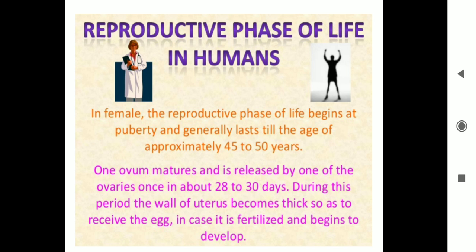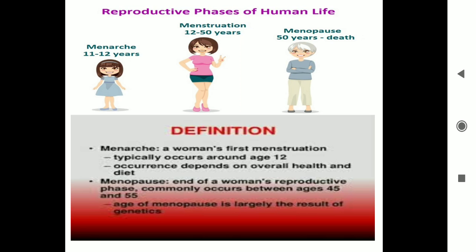This reproductive phase varies across human life, especially in women. Menarche starts from the beginning of puberty, that is around 11 to 12 years. Menstruation begins around 12 years and continues till about 50 years, and in some, due to genetic factors, it may stop at 45. Menopause is the stoppage of menstruation at around age 45 to 50.